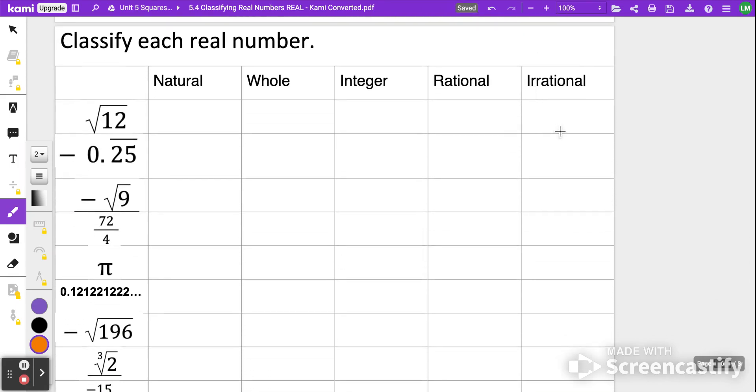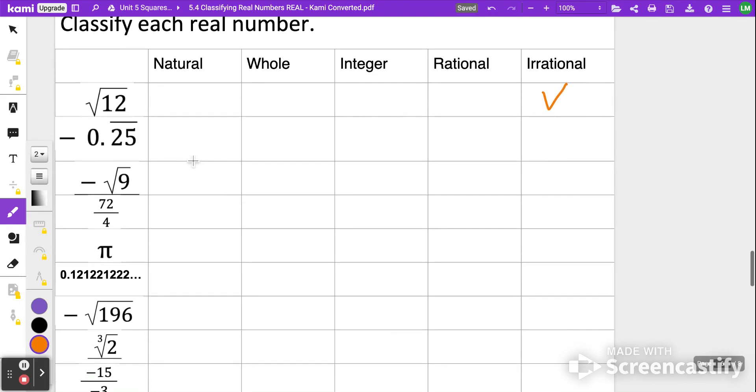So what we're going to do is classify each real number as many of these as possible. The first one we have is the square root of 12. This is not a perfect square, so this one's going to be an irrational number. Next up, we have a repeating decimal, it's negative 0.25. Since it's a repeating decimal, there is a way to write it as a fraction. We're not going to learn how to do that today, but that is considered just a rational number.